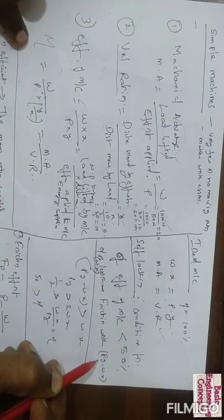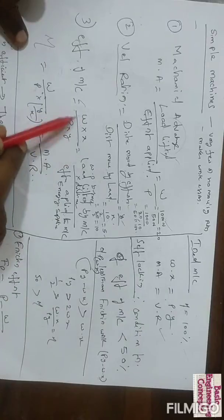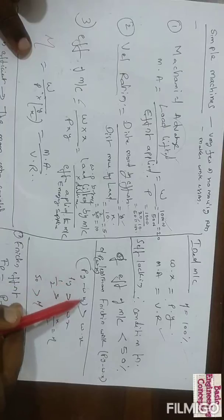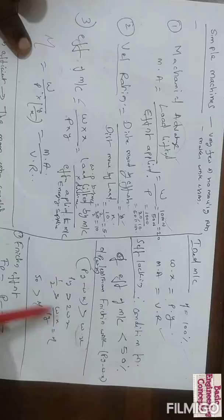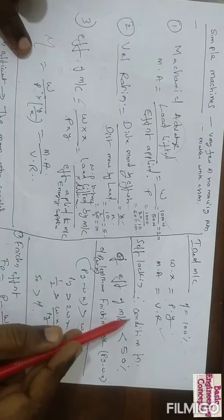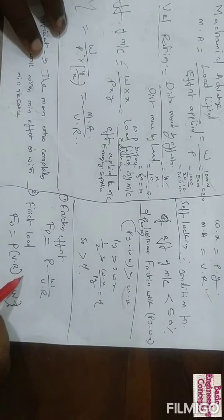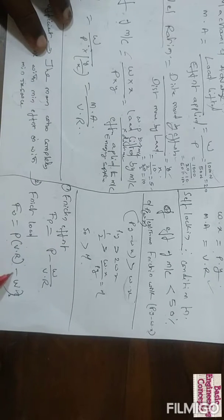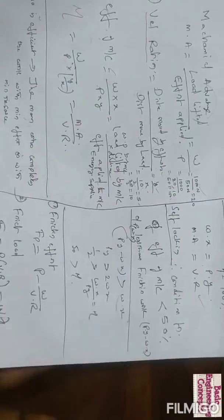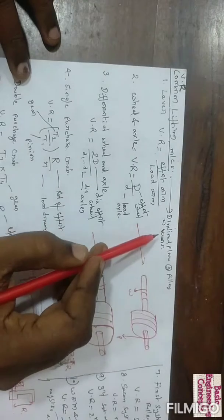For a self-locking machine, the frictional work P times y minus W times x is less than the output W times x. Rearranging this condition gives efficiency less than 50%, confirming that machine is self-locking. Additional definitions: frictional effort Fp equals P minus W divided by velocity ratio, and frictional load Fw equals P times velocity ratio minus W. These are the basic definitions in simple machines.